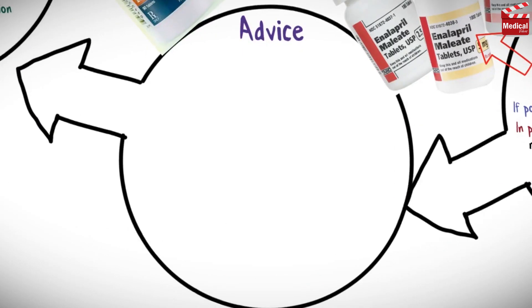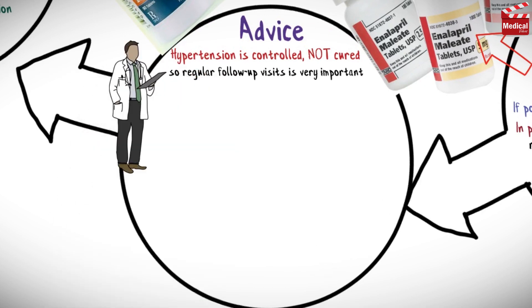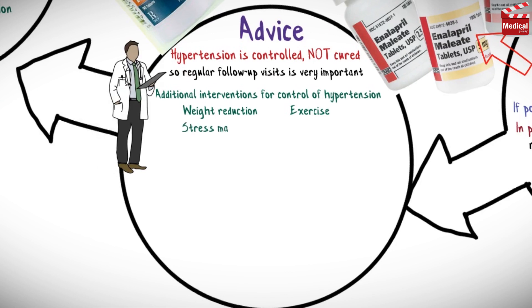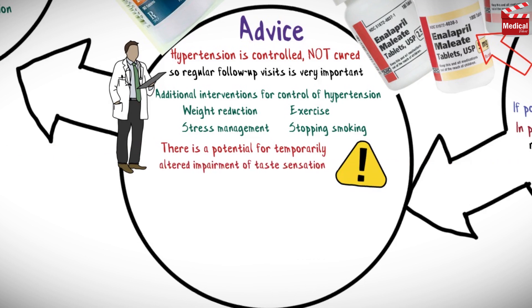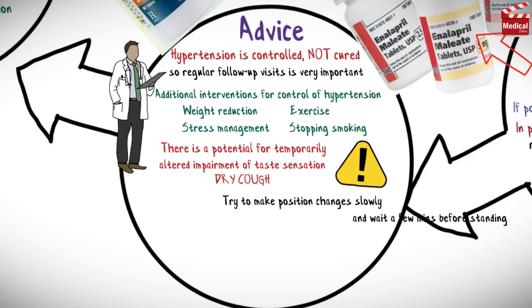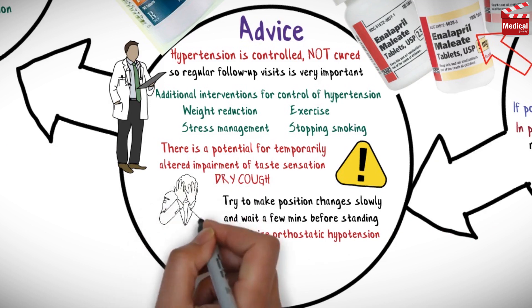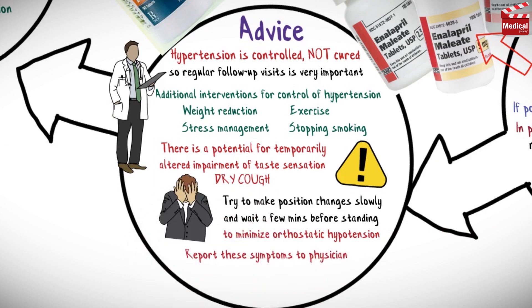Some advice to patients taking enalapril: hypertension is controlled, not cured, so regular follow-up visits are very important. Additional interventions for control of hypertension include weight reduction, exercise, stress management, and stopping smoking. There is a potential for temporarily altered taste sensation and dry cough. Try to make position changes slowly and wait a few minutes before standing to minimize orthostatic hypotension.